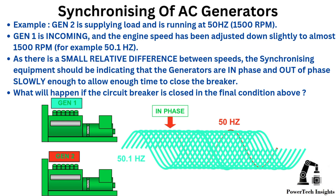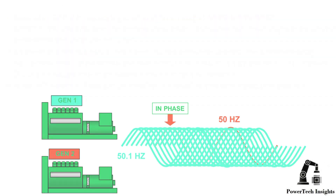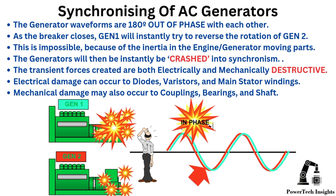What will happen if the circuit breaker is closed when the generator waveforms are 180 degrees out of phase with each other? As the breaker closes, Gen 1 will instantly try to reverse the rotation of Gen 2. This is impossible because of the inertia in the engine/generator moving parts. The generators will then instantly be crashed into synchronization. The transient forces created are both electrically and mechanically destructive. Electrical damage can occur to diodes, varistors, and main stator windings. Mechanical damage may also occur to couplings, bearings, and shaft.